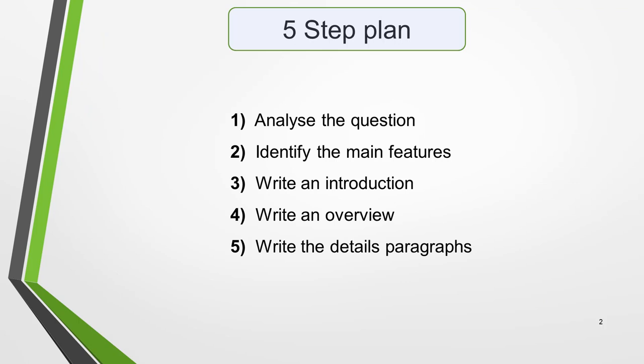To write a high-scoring Academic Task 1 essay, I recommend that you use this five-step process. First, analyze the question. Next, identify the main features of the graphic. Then write an introduction. After that, you write an overview. And finally, you write the detailed paragraphs.